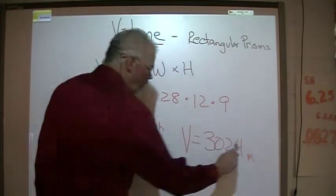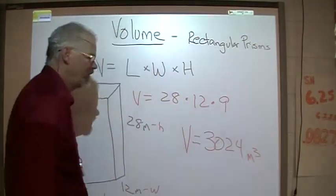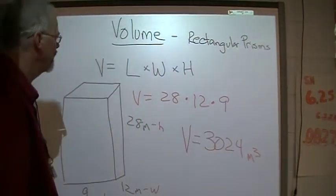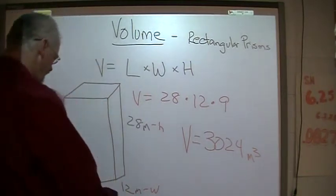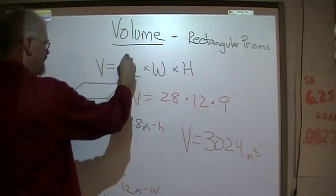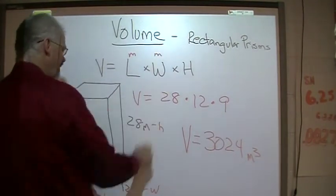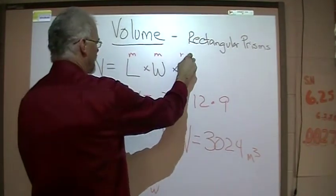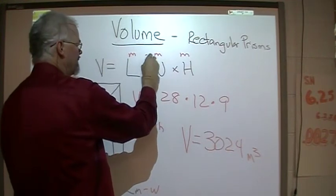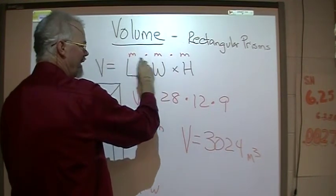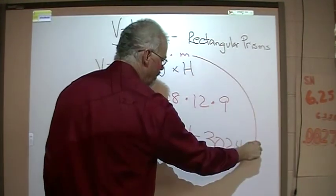Volume is always cubed. To the third power. Cubed. And why is that? Because we got one meter. This length is one meter. This is another type of meter. And this is another type of meter. You have meters times meters times meters, or meters cubed.